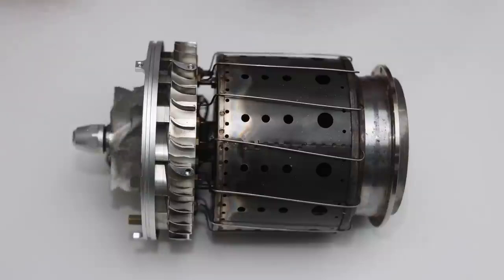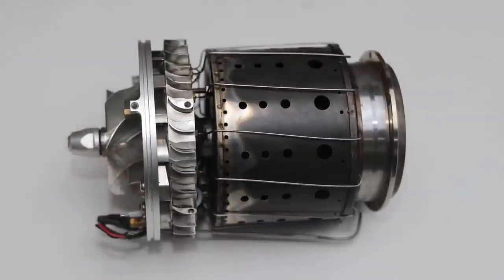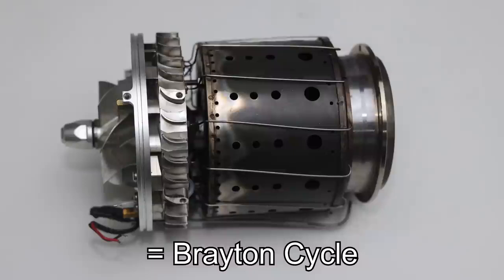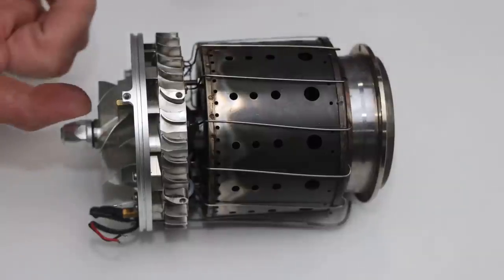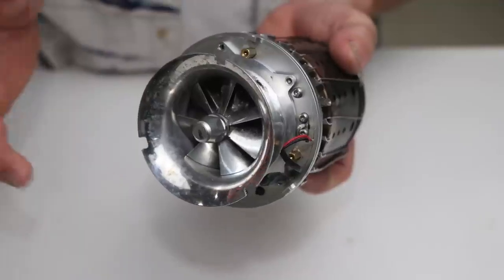When I explain how turbojet engines like this work to people who are familiar with cars, I always use four-stroke as a good example: intake, compression, combustion, and exhaust, all in one continuous cycle. But since you have all these happening in a linear continuous fashion, that makes this a Brayton cycle.